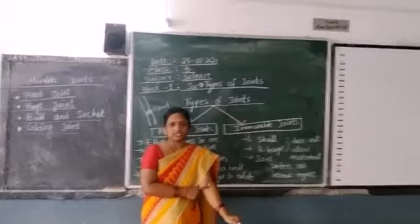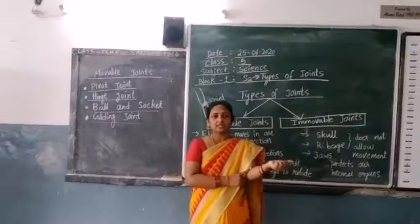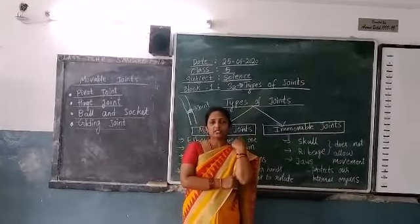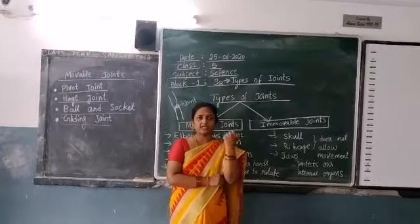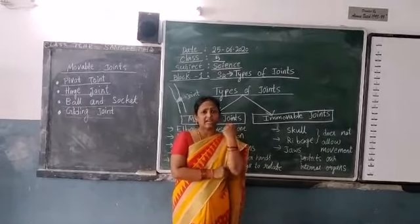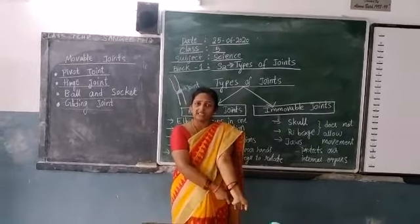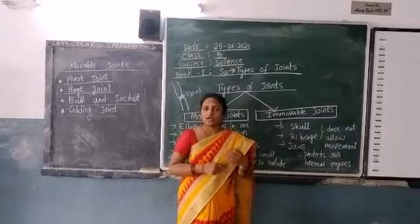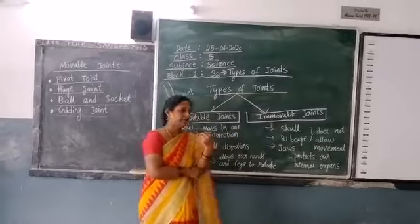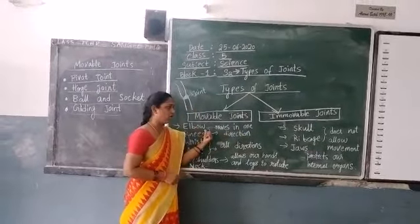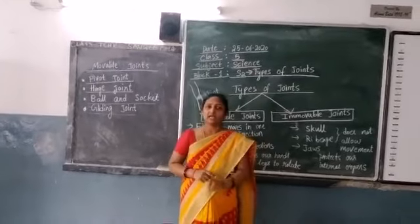Next, come to the elbow region. In our elbow region, it allows your hand to bend. When we are bending, it is able to move only in one direction. Can we bend our hand backward? No, we cannot bend it. So this is allowing movement only in one direction. Our elbow moves in one direction — it allows movement only in one direction.